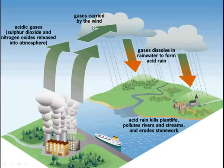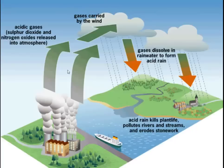Those gases are carried by the wind, and up in the clouds they meet water. Sulfur dioxide chemically reacts with the water in the cloud and that makes sulfuric acid. You know to be pretty careful when sulfuric acid is around because it's pretty acidic. Nitrogen oxides can also react with water in the atmosphere and they form nitric acid, which is if anything even stronger than sulfuric acid.